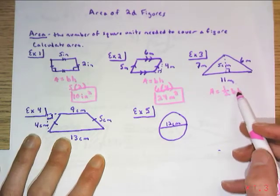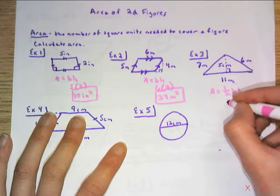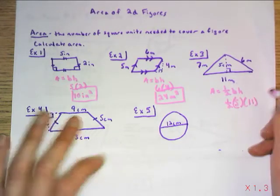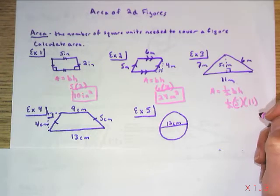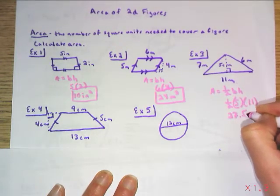So 11 is perpendicular to 5. So I have half, 5 times 11. Essentially, I have half of 55, which is 27.5. Put your units on there, and then you're done.